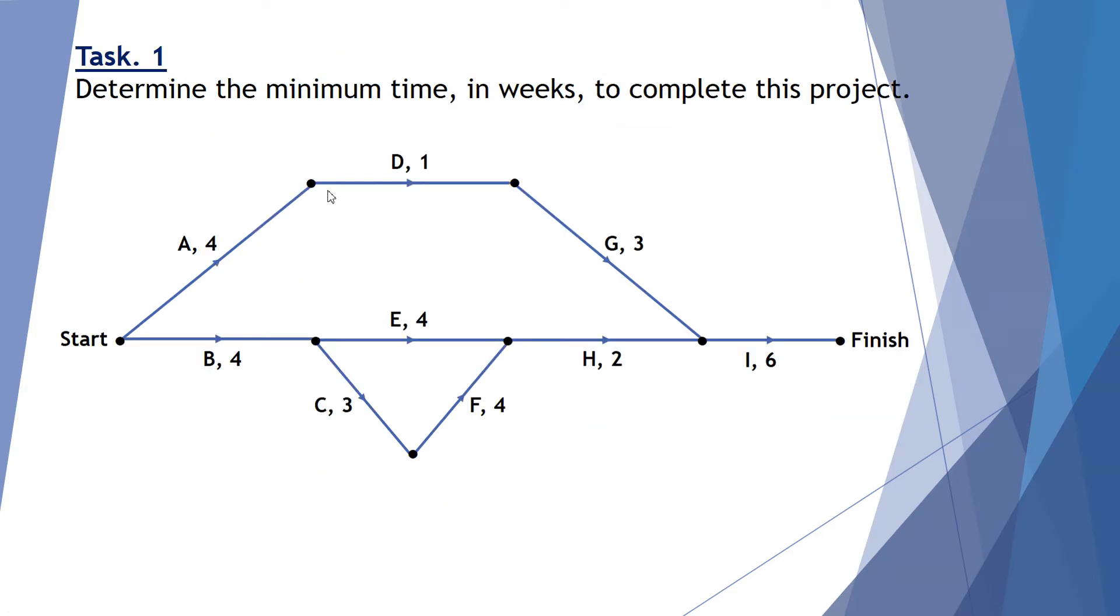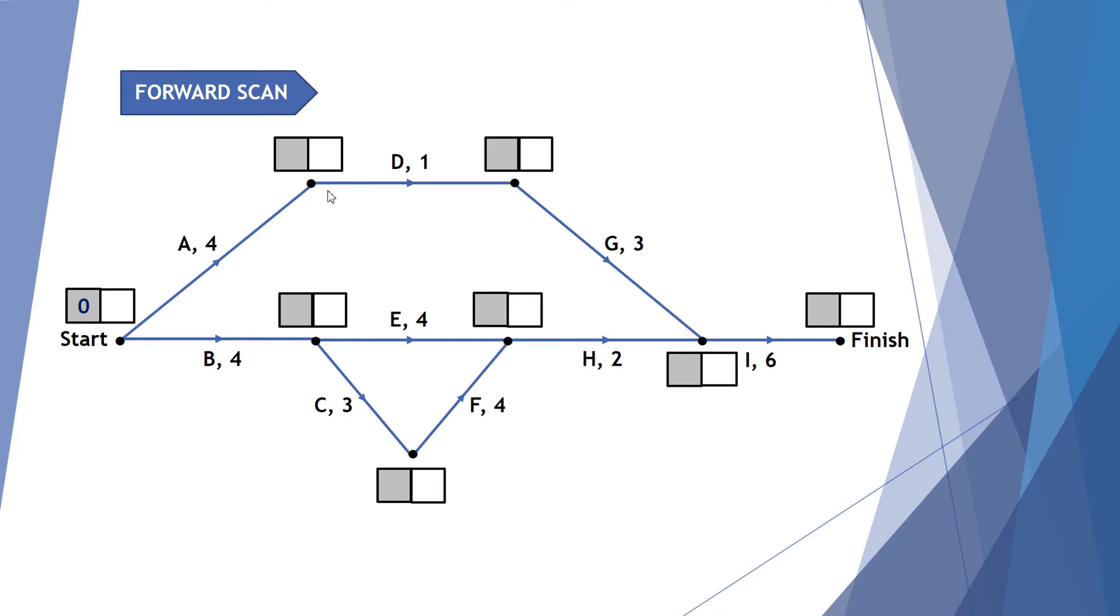First task is to determine the minimum time in weeks to complete this project. In order to do this we'll do a forward scan. So we're going to start at a time of zero and look through each activity. Starting at zero it takes four weeks to complete activity A. So the earliest time we can finish and activity D can start is four weeks. Starting at zero activity B takes four weeks as well.